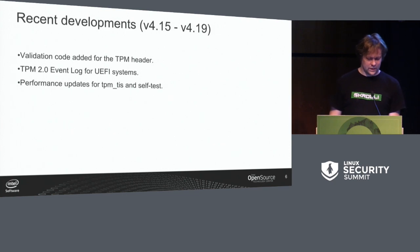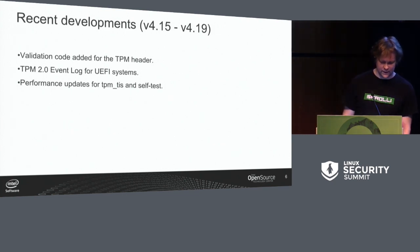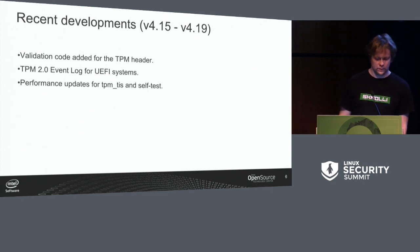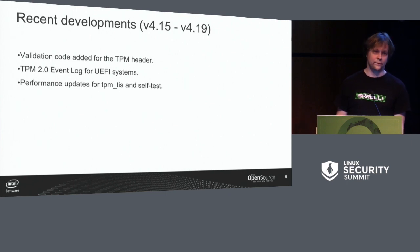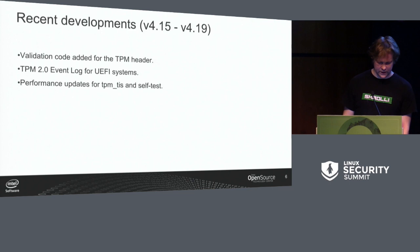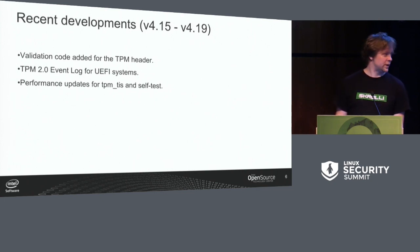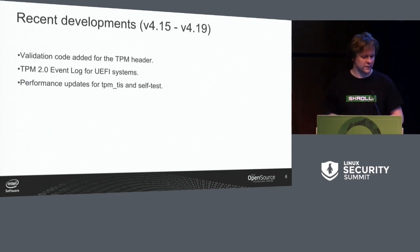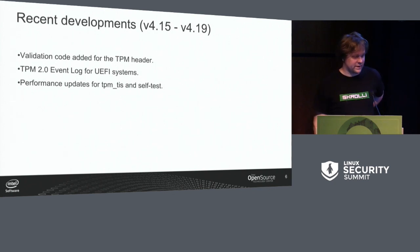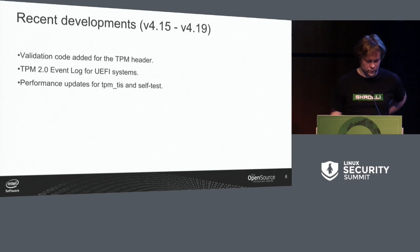Here are the highlights of recent development. Within one year we have added validation code for the TPM header, mainly for underruns and overruns of received data compared to the header. We have added event log support for UEFI — a year ago there was only support for device tree based systems. There's been some performance updates to the TPM TIS driver commonly used with discrete TPMs, and for self-test we have increased the resolution of the timing when we poll the TPM, and we now run it asynchronously so we continue system initialization without waiting for it to complete.